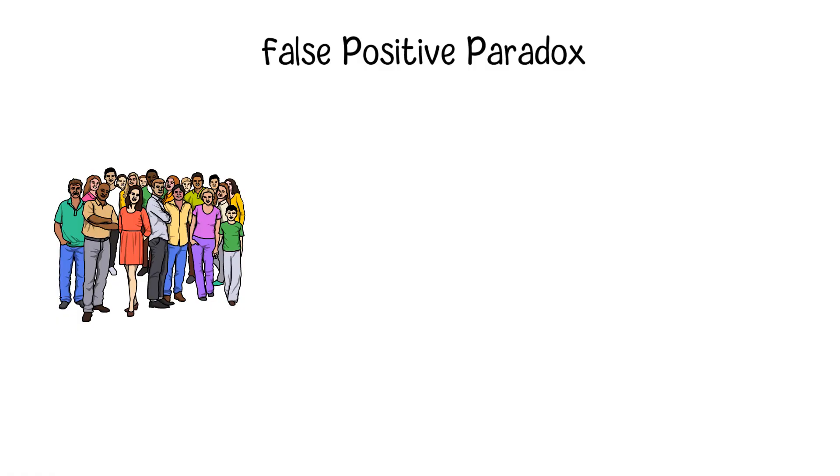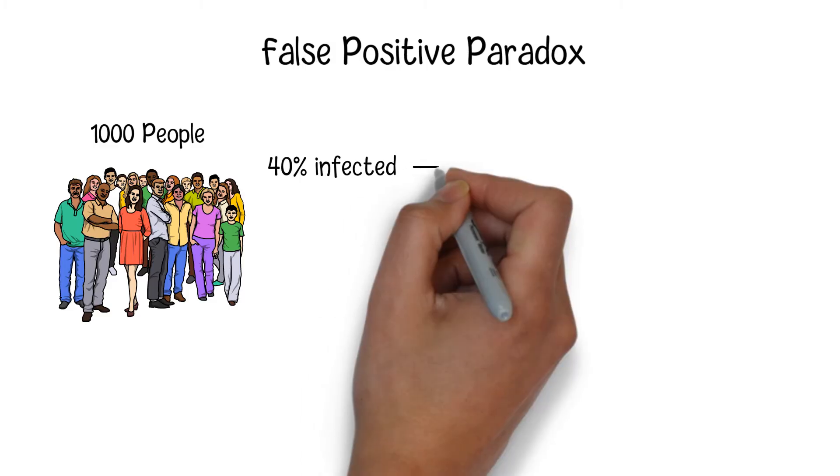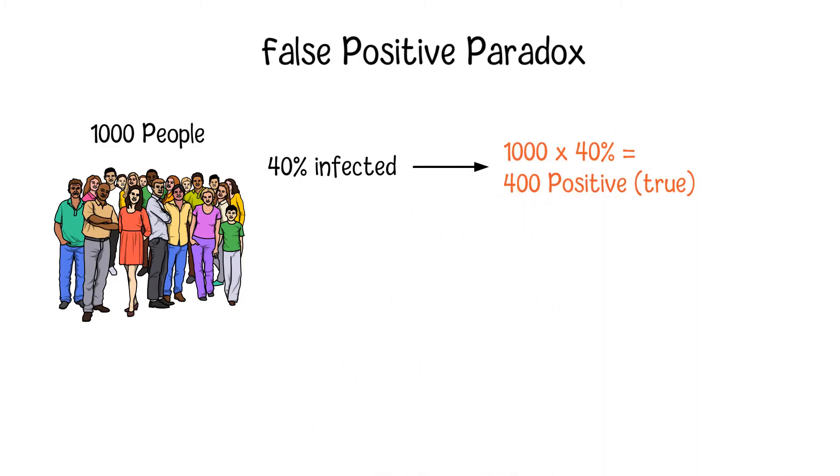For example, imagine doctors are running a test for a certain kind of disease in a group of 1,000 people. Let's assume that 40% of the total people are infected with this disease. So, the total number of people having the positive result will be 400.